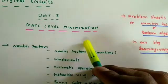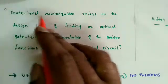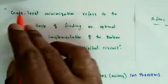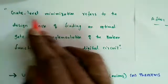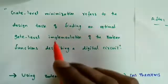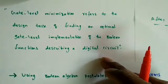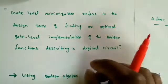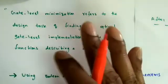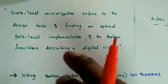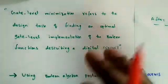Now, why do we need gate level minimization? The name itself indicates it — we have to reduce the number of gates required to implement any Boolean function, which refers to the digital circuit. The ultimate aim is to reduce the number of gates needed to implement any Boolean function.